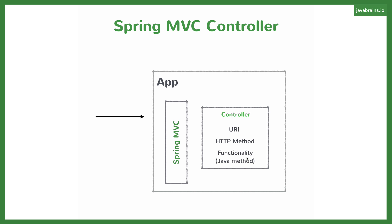These methods are annotated with two pieces of information: one is a URI that this controller is going to handle when a request comes in, and the other is the HTTP method that this controller method is going to handle. So if there's a particular URI with a GET request coming in, you write a method and put the right Spring MVC annotations that map that URI and HTTP method so that the method gets executed.